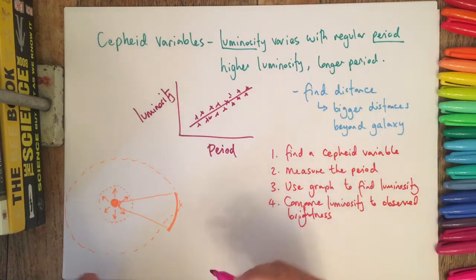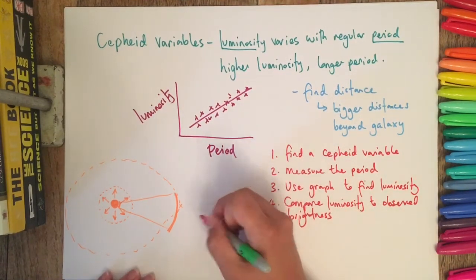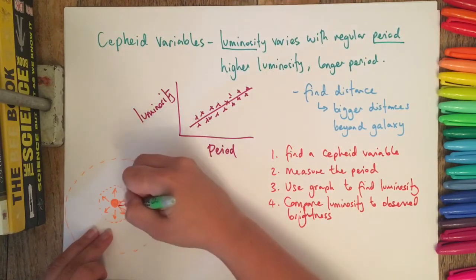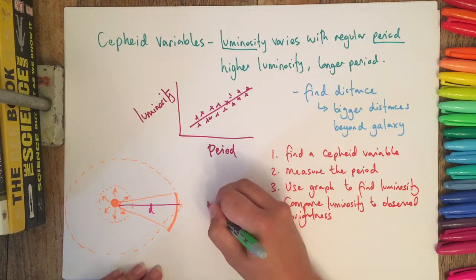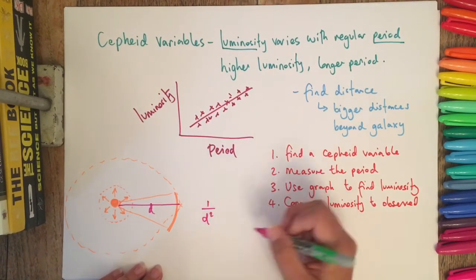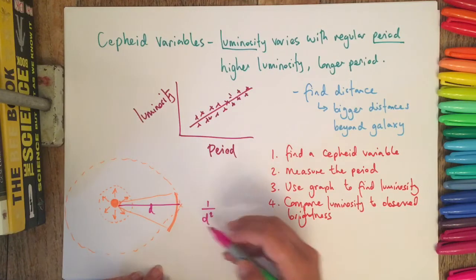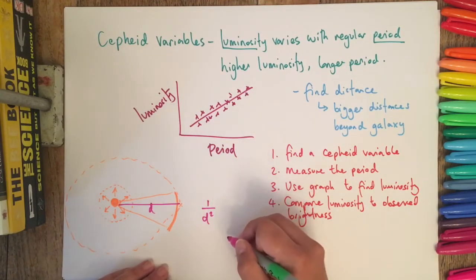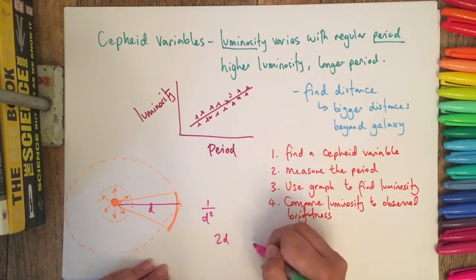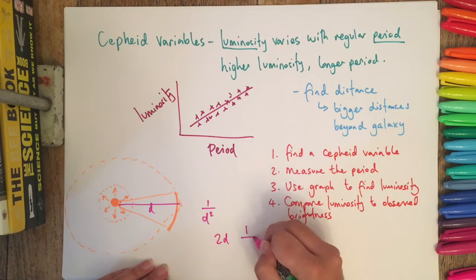The relationship is called an inverse square law. Basically, if we're talking about the distance from the object to wherever it started, we could call this d, and it's 1 over d squared. So if we had two lots of d, then the light falling there would be 1 over 2 squared, so you'd end up with a quarter of what you had originally.